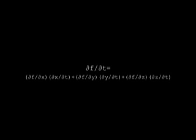then the partial of f with respect to t is the partial of f with respect to x times the partial of x with respect to t, plus the partial of f with respect to y times the partial of y with respect to t, plus the partial of f with respect to z times the partial of z with respect to t.